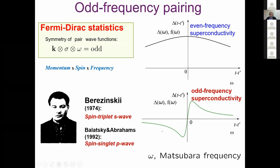It was realized a long time ago by Berezinskii, and later applied to high-TC superconductors by Balatsky and Abrahams, that we have to consider more general classification also taking into account the time degree of freedom. If we add this degree of freedom, then we can also have two more cases: spin-triplet S-wave case or spin-singlet P-wave case. In this case, we speak about odd-frequency pairs.